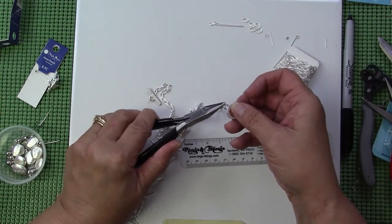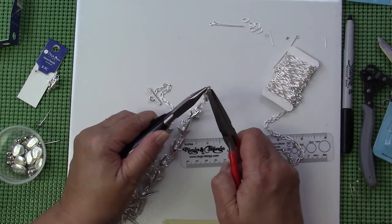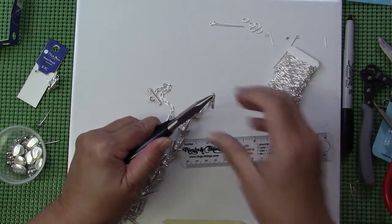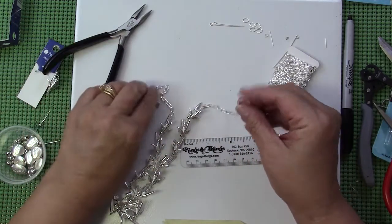I'll add the other side of the clasp. This is a really simple toggle clasp. You could use any number of types of clasps. This just happened to be what I had. We will close that up and it comes together beautifully.